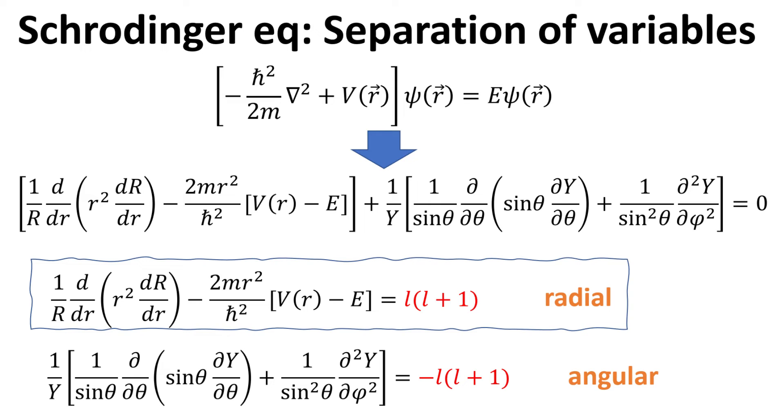The first equation is the radial equation, which depends on the Coulomb potential energy term, whose solutions will be presented in this video. The second equation is the angular equation, whose solutions give us the spherical harmonics Y, which we have already presented in a previous video.